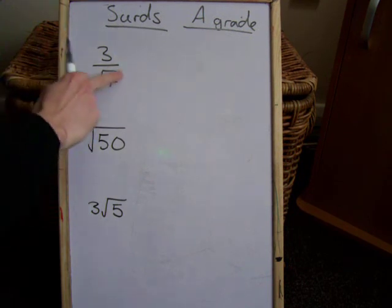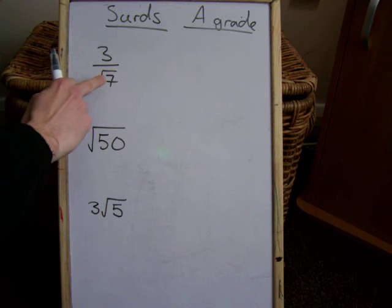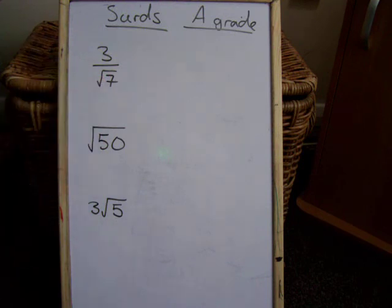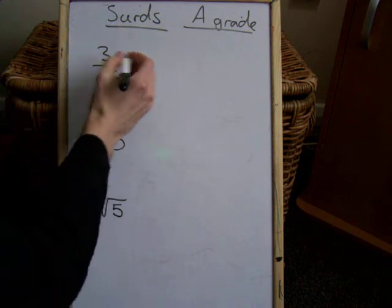What this means is my denominator, the bottom, has to end up being a whole number. It has to be rational. Now a third is irrational in this case because I can't simplify it.